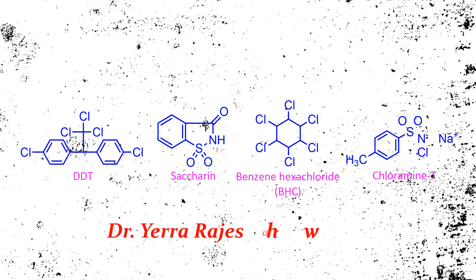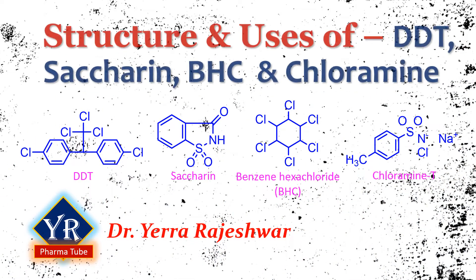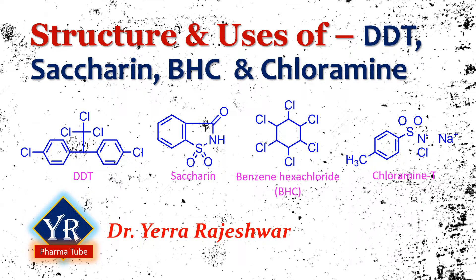Hey guys, this is Dr. Rajeshwar from YR PharmaTube. In the previous video, we discussed the orientation of monosubstituted compounds toward electrophilic aromatic substitution reaction. If you did not watch it, hit the i button on top right of this video to watch it. For the other topics of benzene and organic chemistry, links are available in the description below this video. In this video, we shall discuss the structure and uses of DDT, saccharine, benzene hexachloride and chloramine.